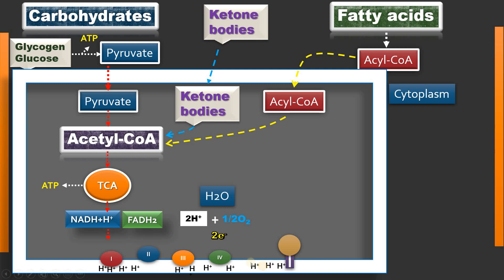These protons generate a proton motive force in the intermembranous space. Protons then come out through the ATP synthase. ATP synthase has two components; since protons cannot re-enter the mitochondrial matrix by any other route, they must pass through ATP synthase. When protons pass through, a component of ATP synthase rotates at high speed. In the mitochondrial matrix, ADP and inorganic phosphate are combined to give ATP.